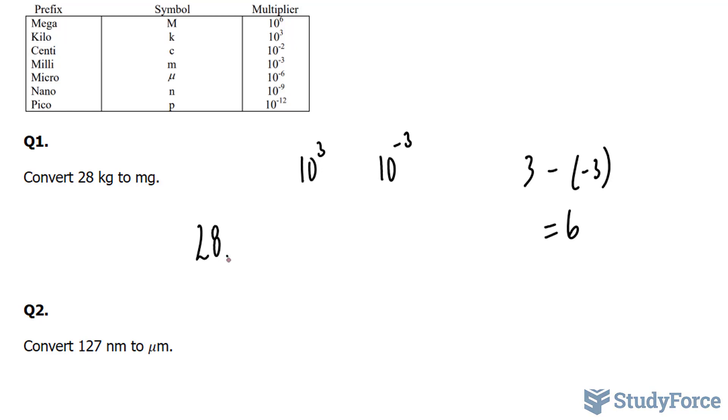And if we move it 6 times to the right, as shown, that's 3, 4, 5, and 6, you're going to end up with 6 more zeros after that 8. So in other words, your final answer is 28 million milligrams is the same thing as 28 kilograms.